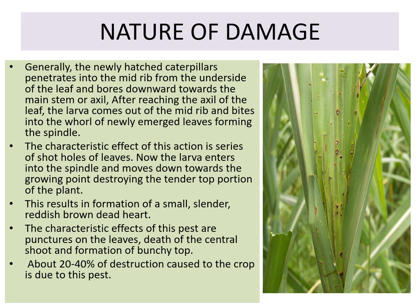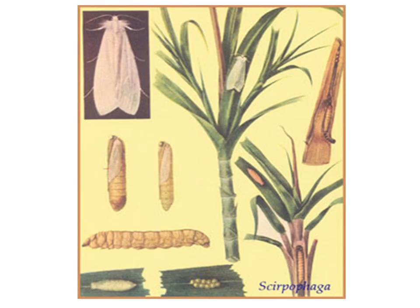About 20 to 40 percent of crop destruction is caused by this pest. The life cycle of Scirpophaga nivella includes egg, larva (caterpillar), pupa, and adult. It is a moth that feeds on the top portion and is therefore known as the sugarcane top borer.